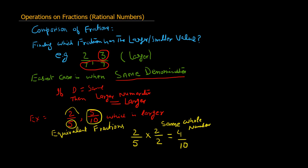Now we compare 5 divided by 10 and 4 divided by 10. Our problem has been simplified — we compare these two using the first rule. The denominator is the same, so the fraction with the larger numerator is larger. So 5/10 is our answer.